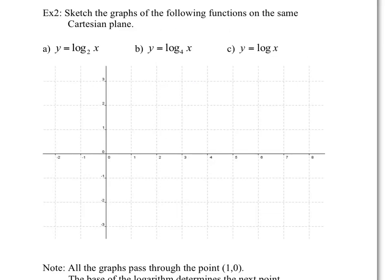So let's sketch these three different graphs all in the same Cartesian plane. Log base 2 of x is going to pass by the point (1,0) — that's a point for all log functions. And because the base is 2, we're going to have the point (2,1). There is a vertical asymptote here. I'm going to add another point. If you think of the exponential function, the points would be (0,1), (1,2), and (2,4), so the inverse gives us (1,0), (2,1), and (4,2).